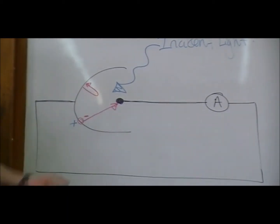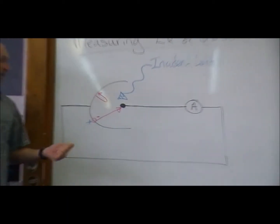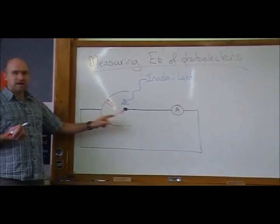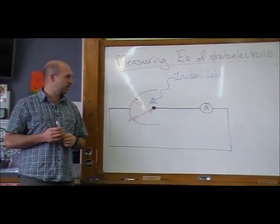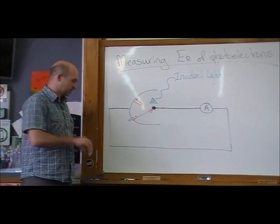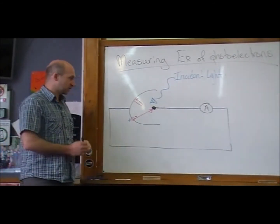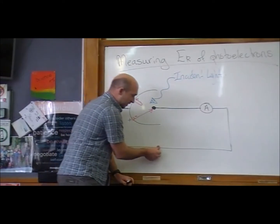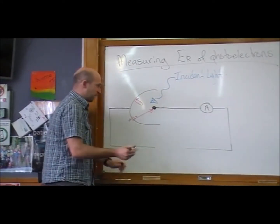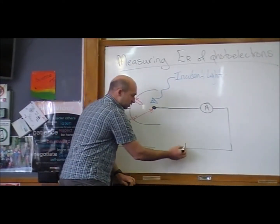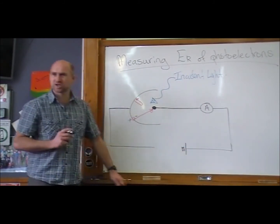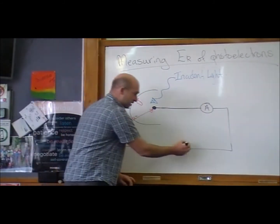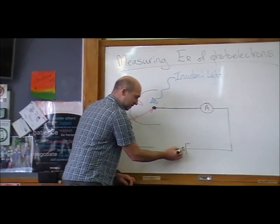This is really cool because we can alter the circuit now in order to measure the maximum amount of kinetic energy that any electron is emitted with. And what we can do, the way we do that, is attach a power pack but reverse the power pack so that it's trying to push the current back the other way. So remembering that this is the plus end of the power pack.